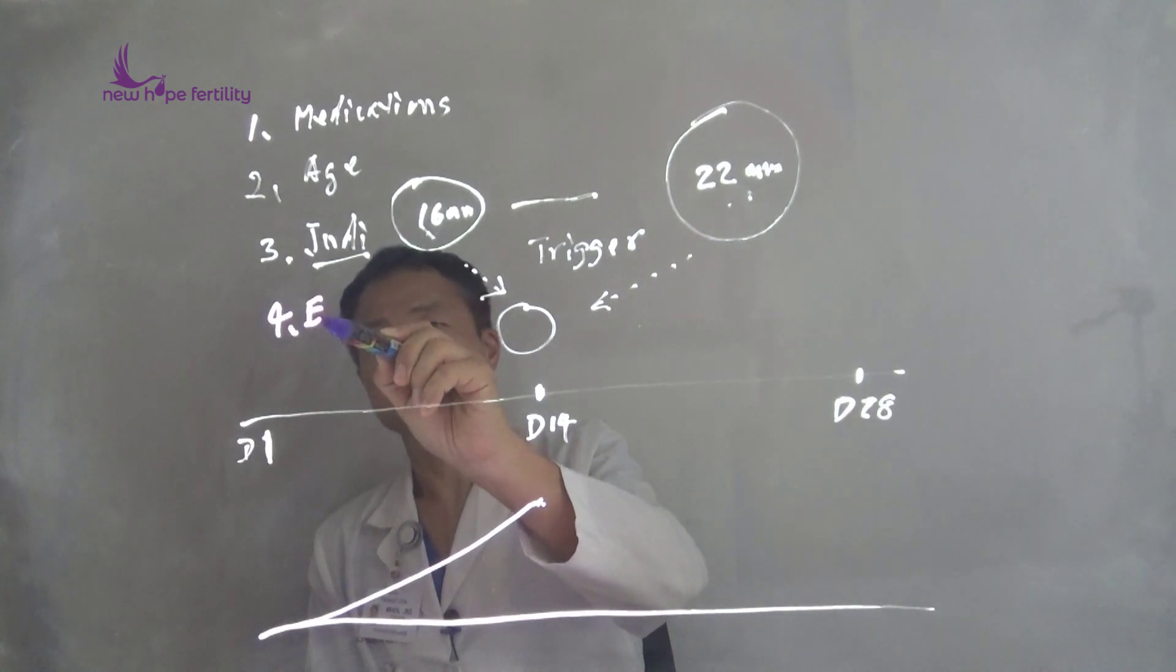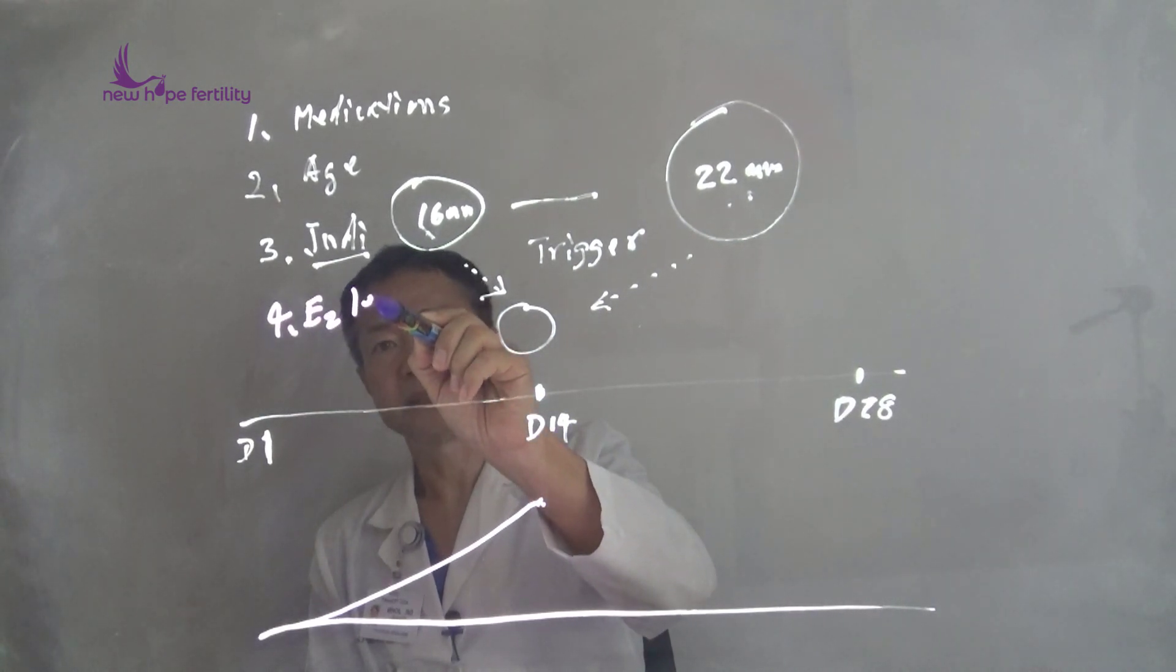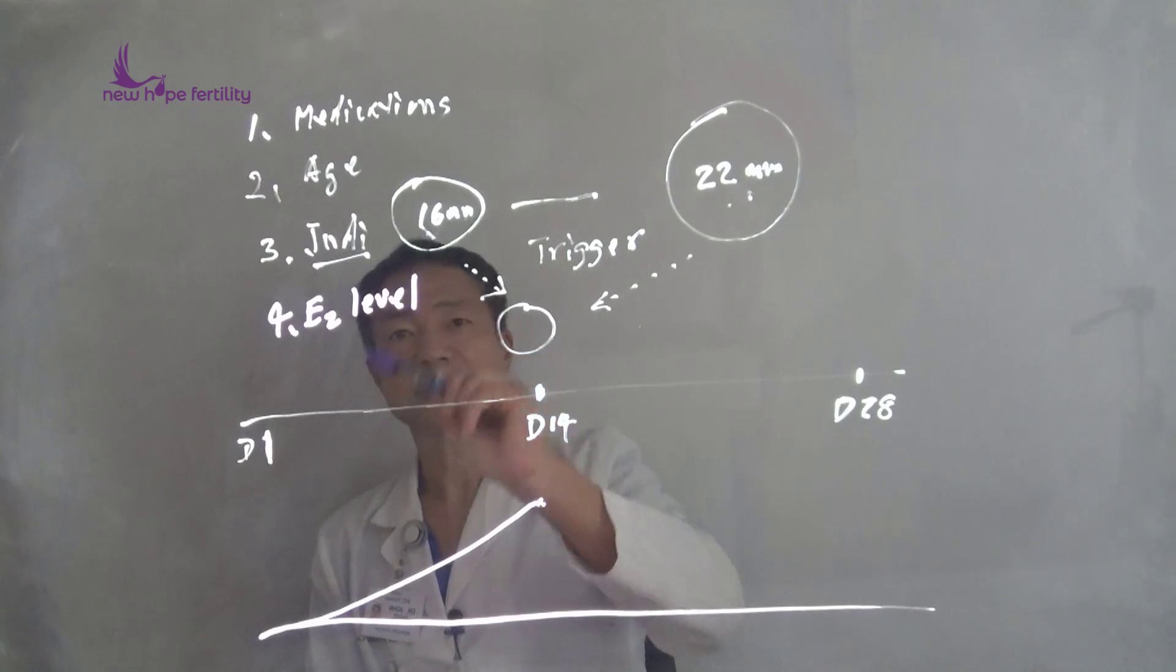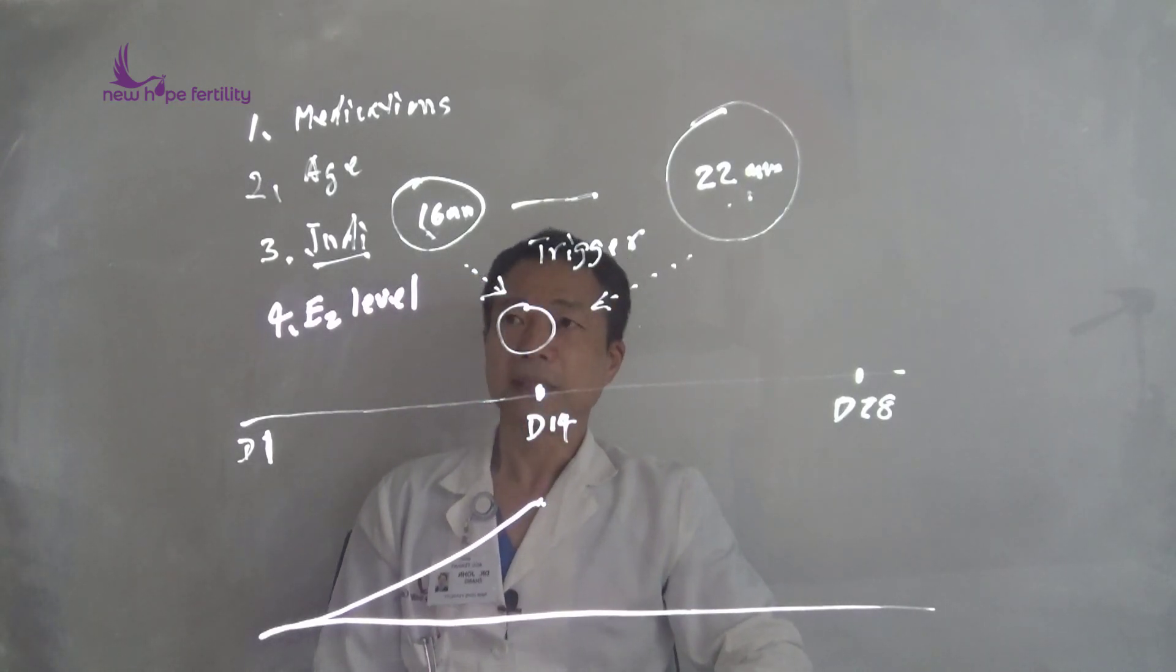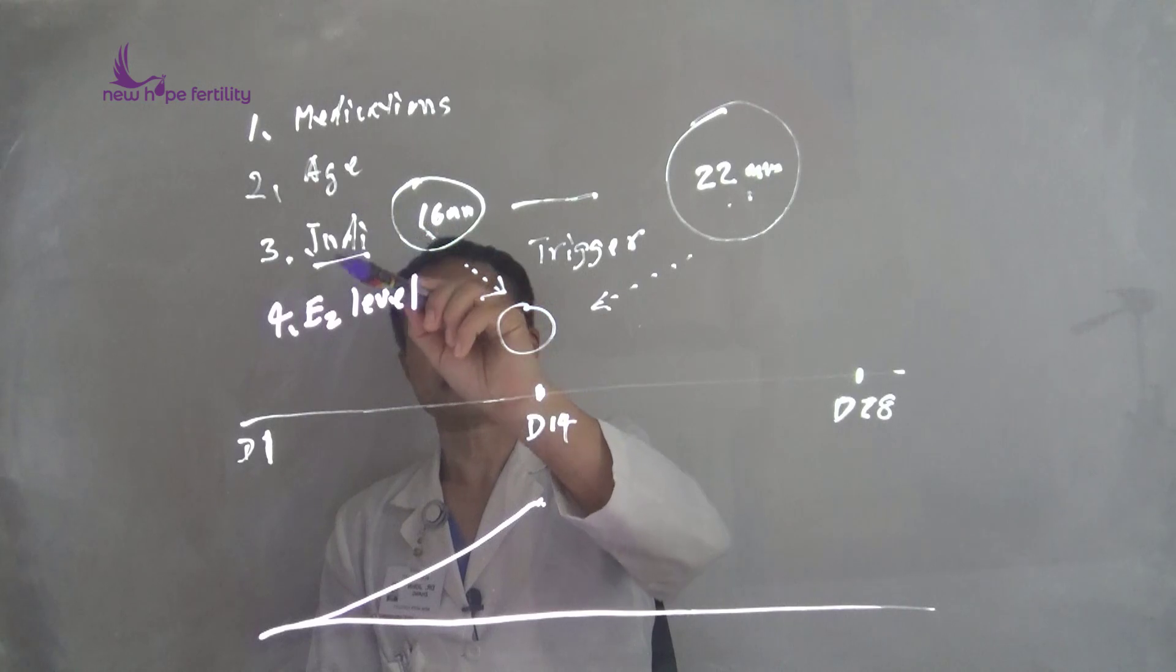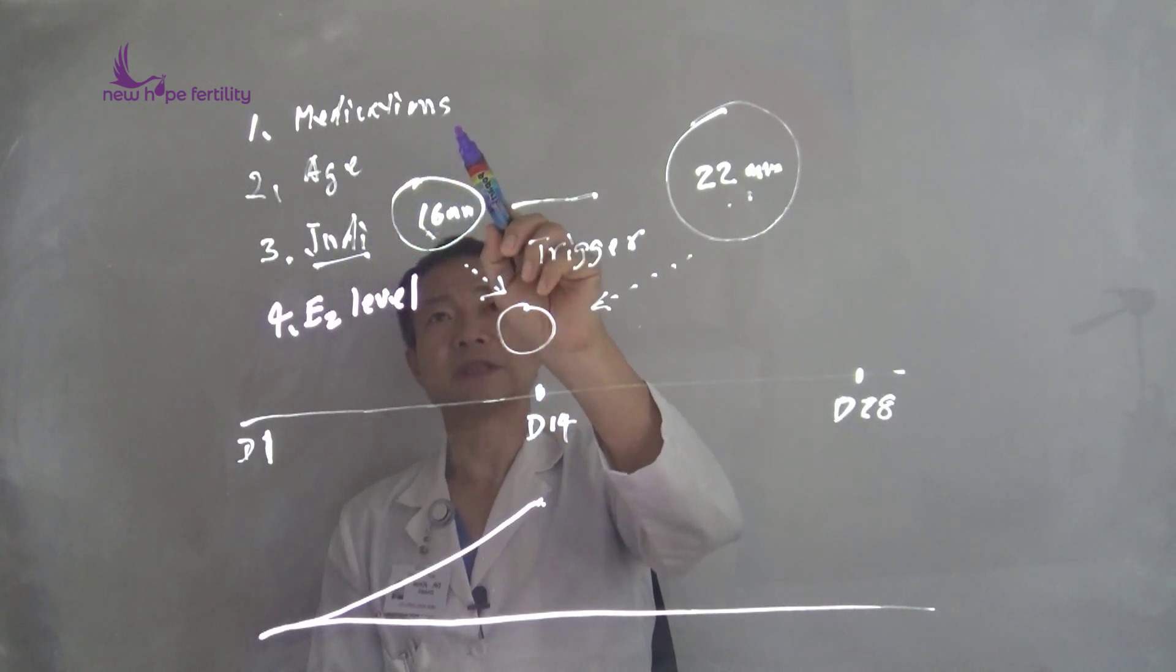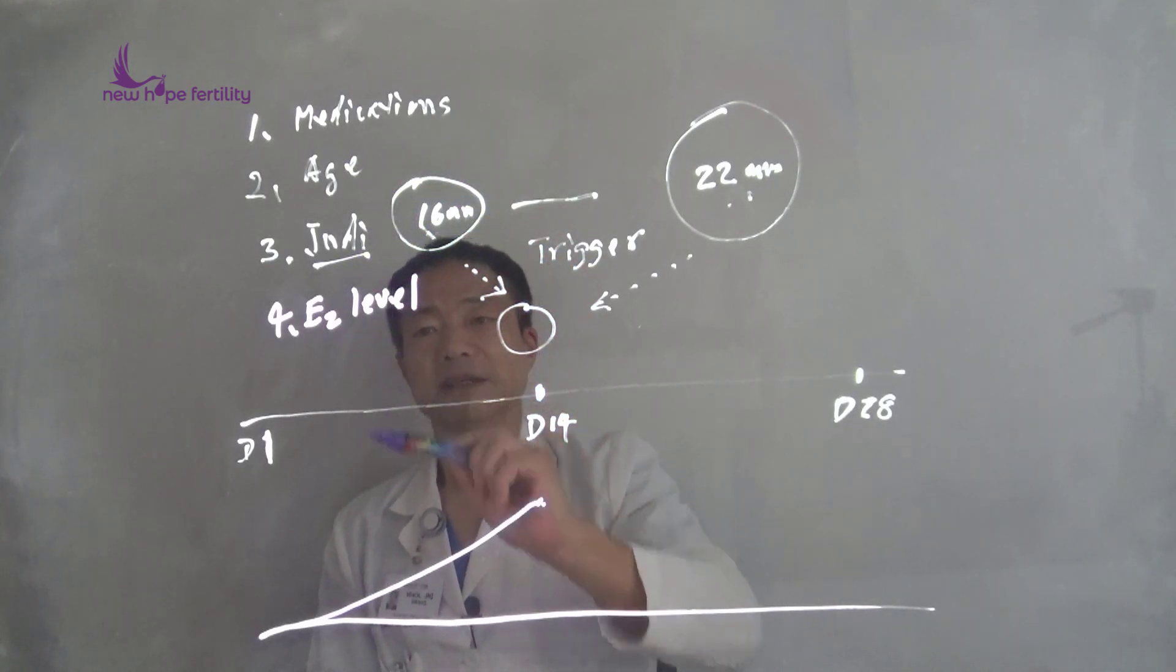So it depends on number four, E2 levels. It is not a simple question of saying 16 or 18. It depends on the age, individual variation, if you take medications, and your estrogen levels.